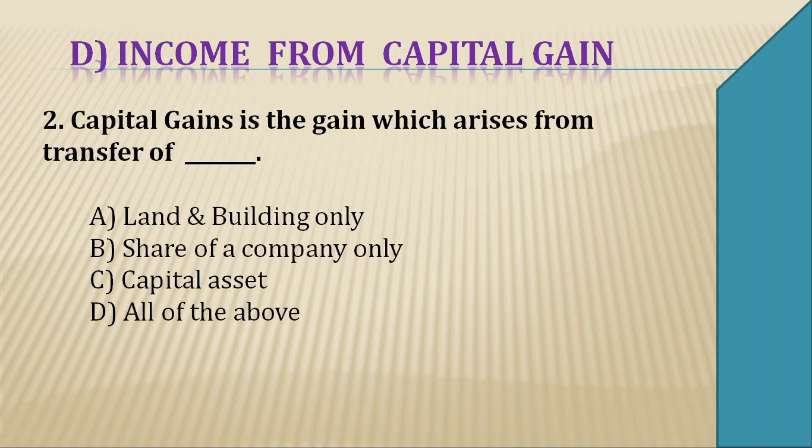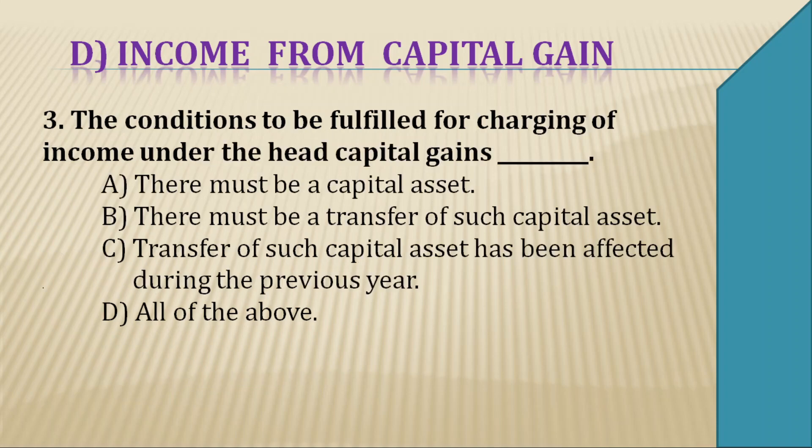Question 2: Capital gain is the gain which arises from the transfer of ____. The concept of income from capital gain is that capital gain is the gain which arises from the transfer of a capital asset. So our right answer is C — transfer of capital asset.